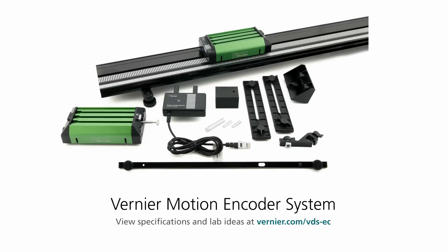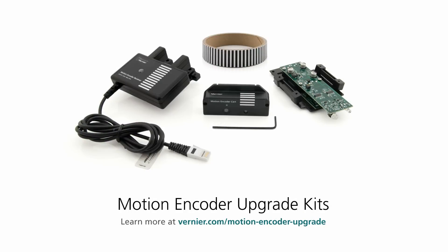The motion encoder system can be purchased as a complete unit with two carts, a track, the receiver, and other hardware. You can also buy pieces to upgrade an existing Vernier dynamic system to become a motion encoder system.